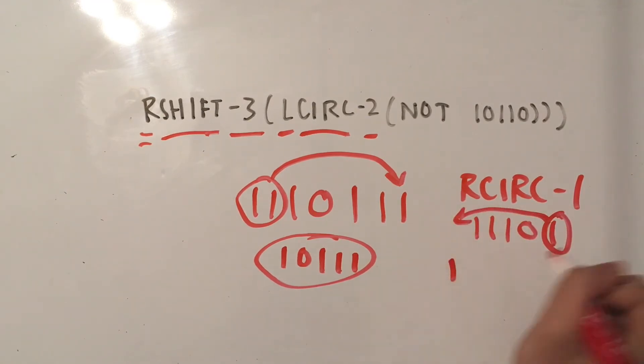So now we have this 1, and then we write the remaining of the numbers. So we have 4 1's and a 0.